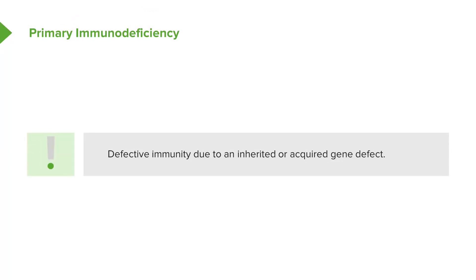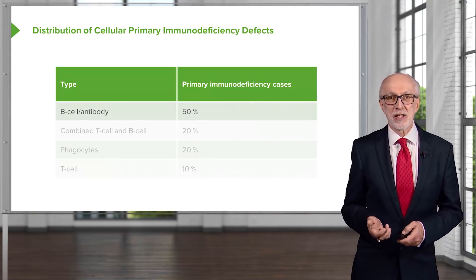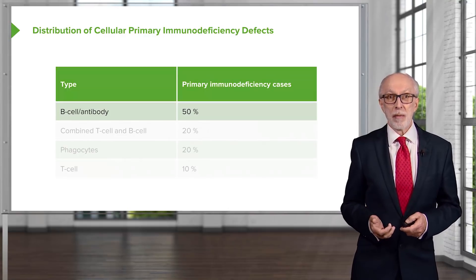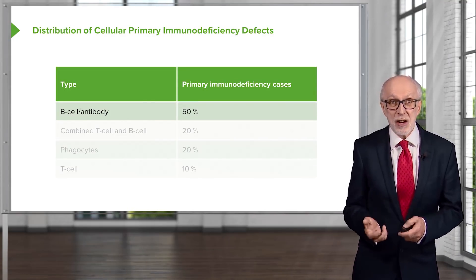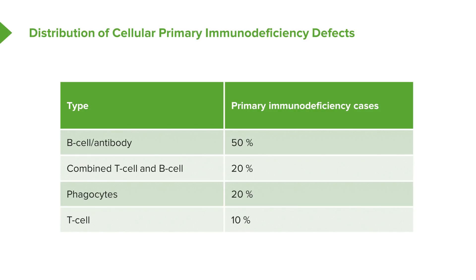Primary immunodeficiency is defective immunity that is due to either an inherited or an acquired gene defect. The distribution of cellular primary immunodeficiency defects is that around about half of them are caused by defects in B cells and therefore in antibody production. Around about 20% are combined T and B cell defects. Approximately 20% affect the phagocytic cells, and around about 10% affect just the T cells.